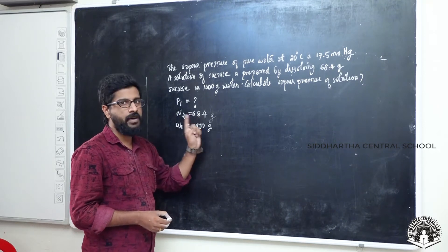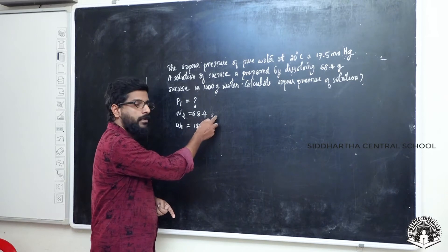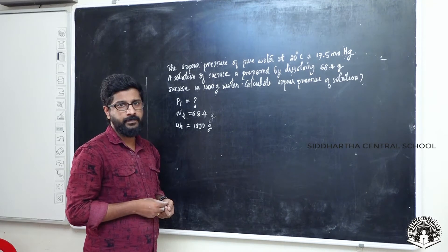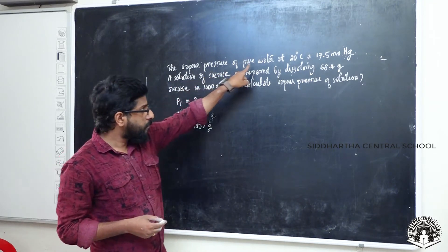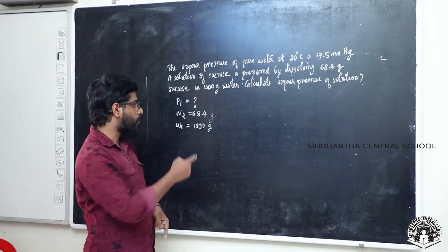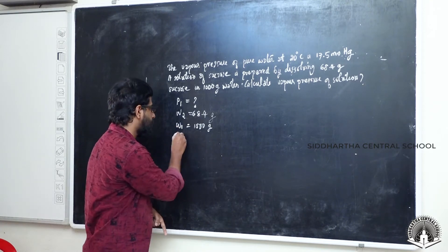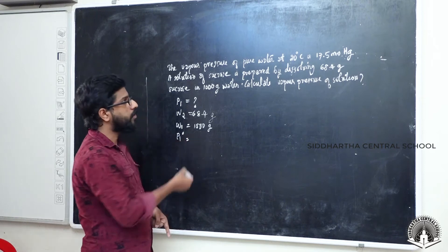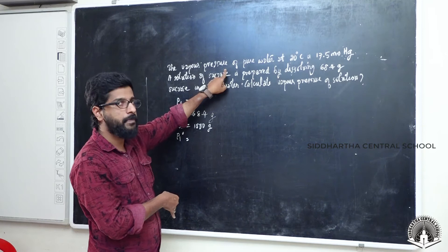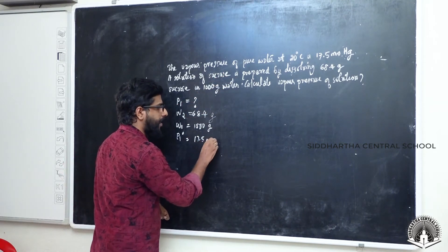W2 is the given mass of solute and W1 is the given mass of solvent. The vapor pressure of pure water at 20 degrees Celsius is 17.5 mmHg. Since water is the solvent, this is the term P1⁰ — the vapor pressure of the pure solvent — and P1⁰ equals 17.5 mmHg.